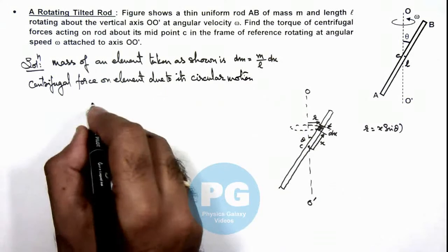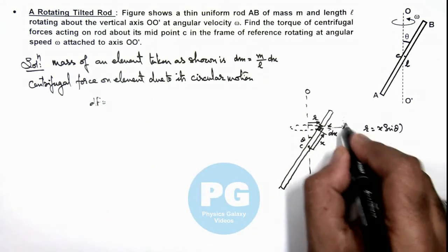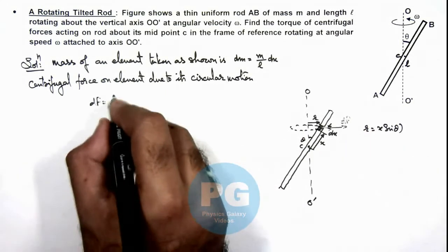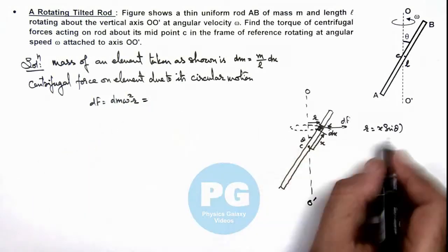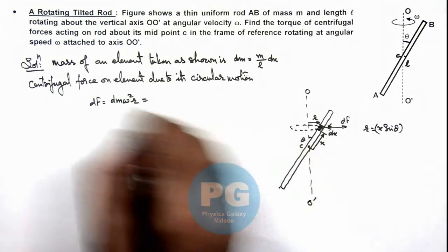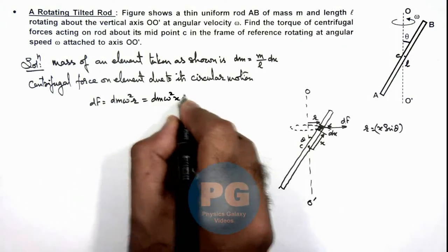This centrifugal force df we can write, which is acting in outward direction and the value of df we can write as dm omega square r. The value of r we can substitute as x sine theta, so this is dm omega square x sine theta.